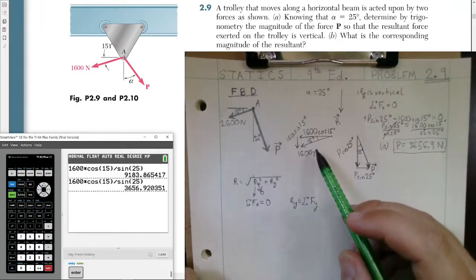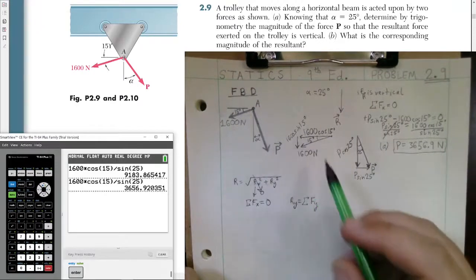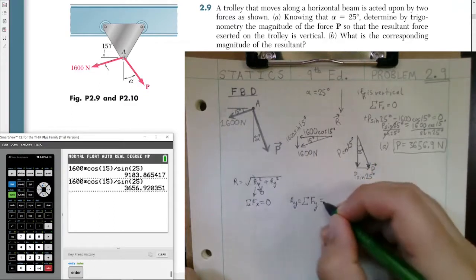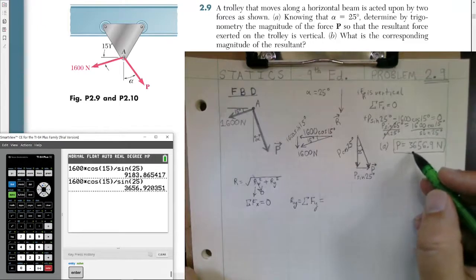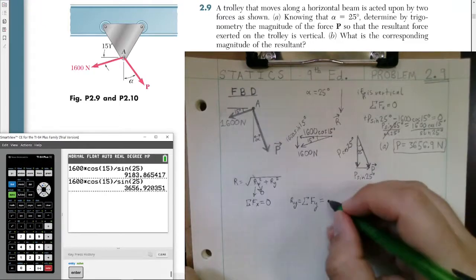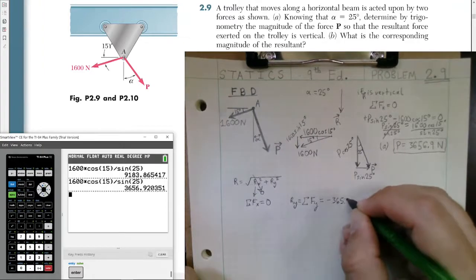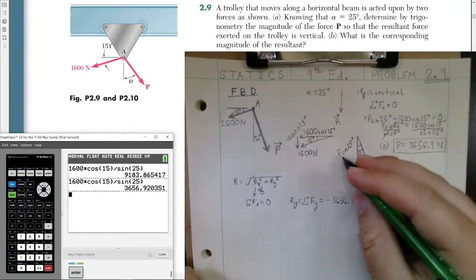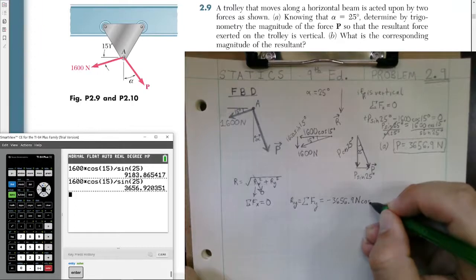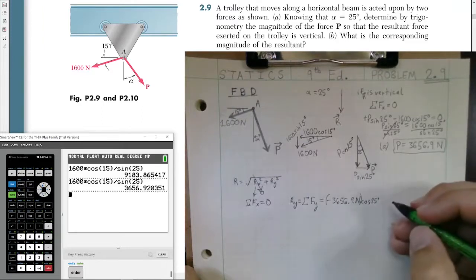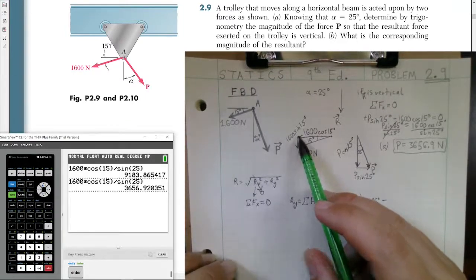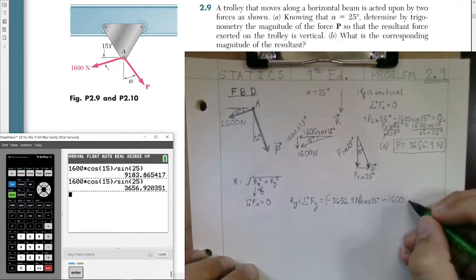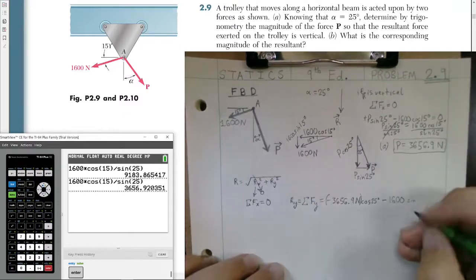Now we're going to use our free body diagrams for our vectors. Again, we're going to use the vertical components. So we have both of these going down. So both will be negative. We'll take down to be negative in the negative y-axis direction. So we have P cosine of 25. Well, P, we know the value now, this number here is 3,656.9 Newton force. So it'll be negative 3,656.9 Newton force times the cosine of 25 degrees. Now, we need to also include our 1,600 Newton vector in its vertical component, which would be minus 1,600 times the sine of 15 degrees.